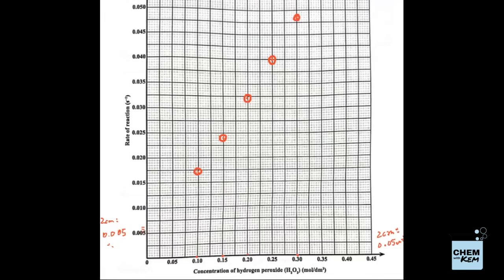All five points are now plotted correctly. Next, we draw the line of best fit. It doesn't always have to go through the origin, but this one appears to do so. Use a ruler, try to get all points falling on the line. If they don't all fall on it, aim for an equal number on each side. This appears to be a good straight-line trend through the origin.